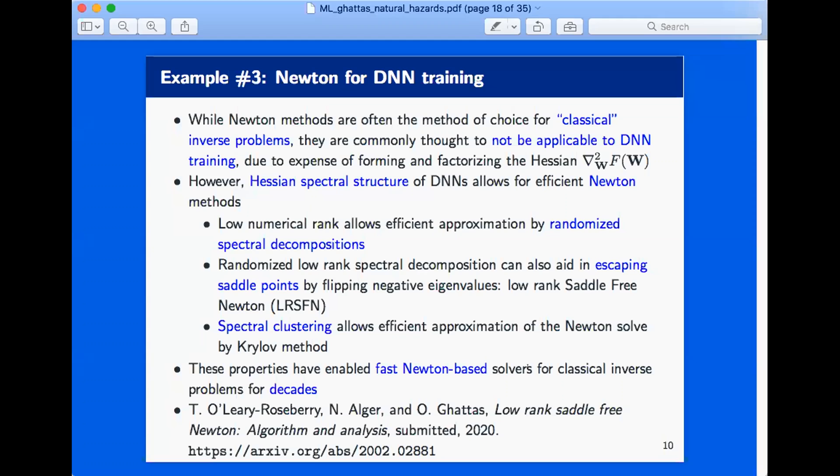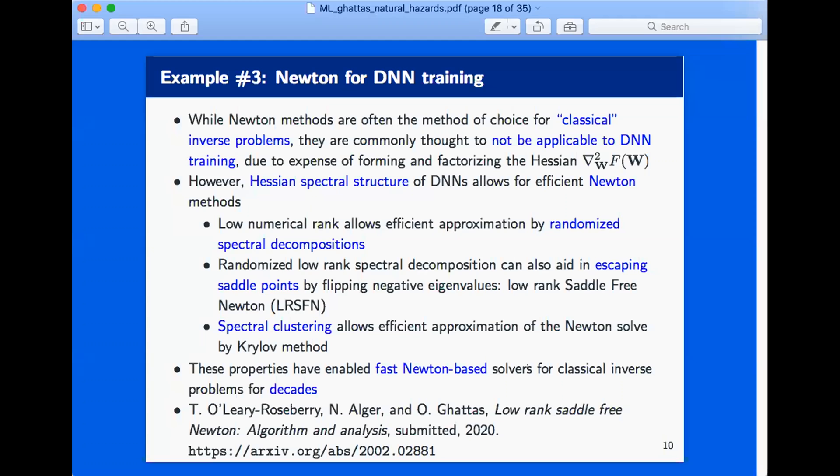I won't talk about the third problem. I'll just say it in name: higher-order optimization methods for training networks. Stochastic gradient descent, Adam is the universal technique now. But you can actually do better, as we've learned in inverse theory. So let me just jump, because I'm running a minute left, I think.